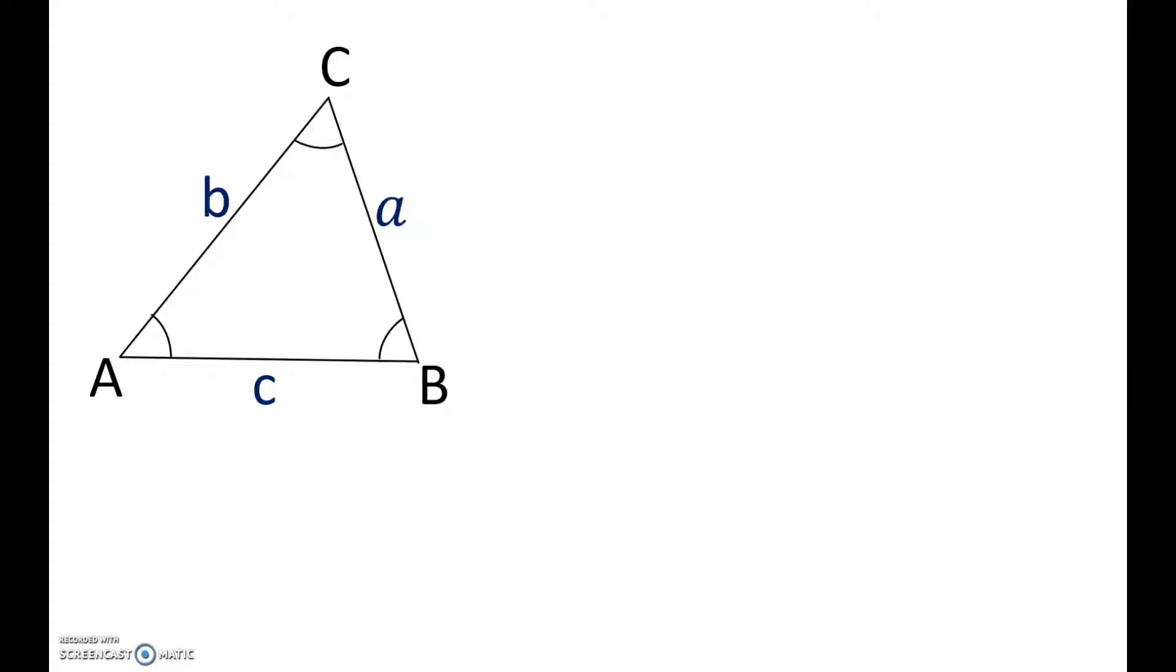Sine rule is applied when you don't have a right-angled triangle. Let's see the triangle here, A, B, C. It's not right-angled in any of its vertices. Let's draw a perpendicular line from C and connect it with A, B. And we can call this as the height of the triangle.